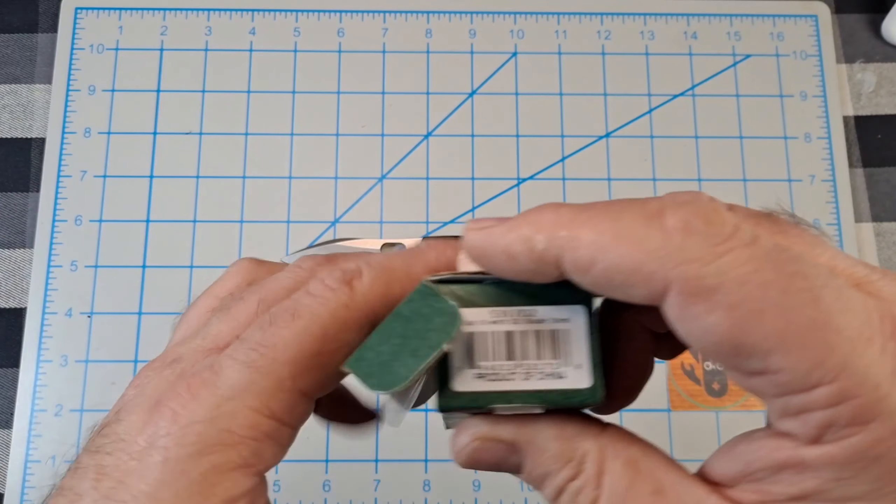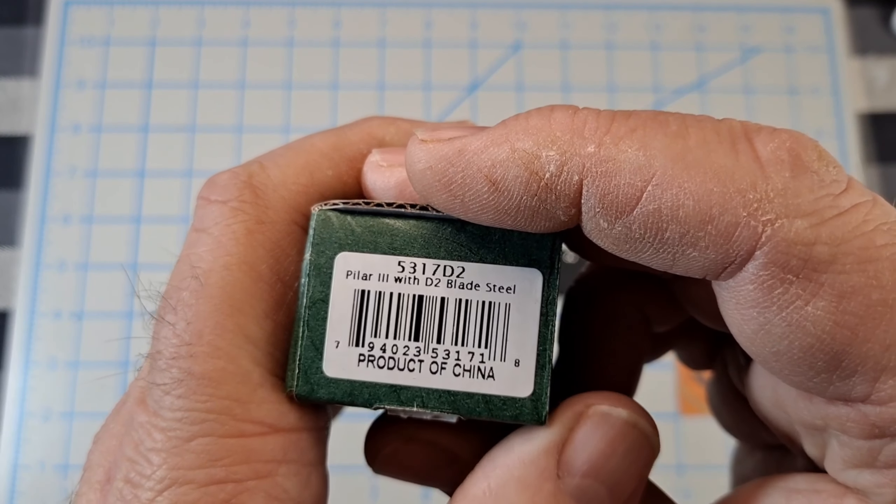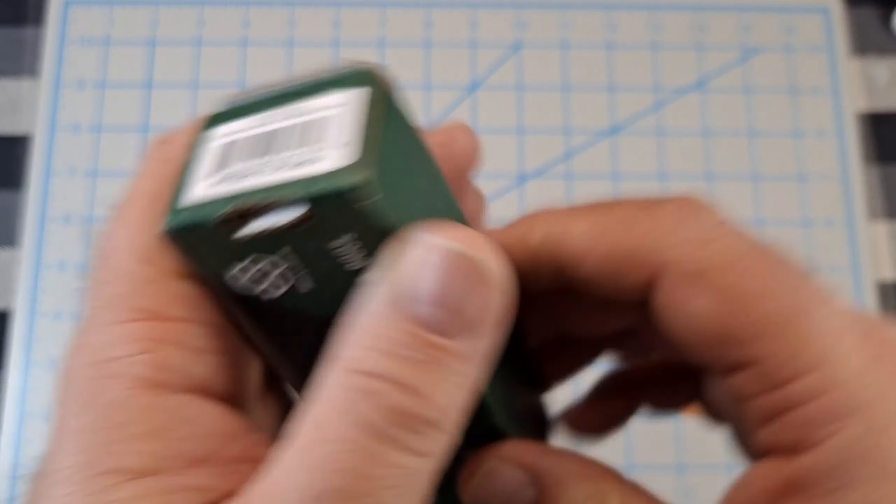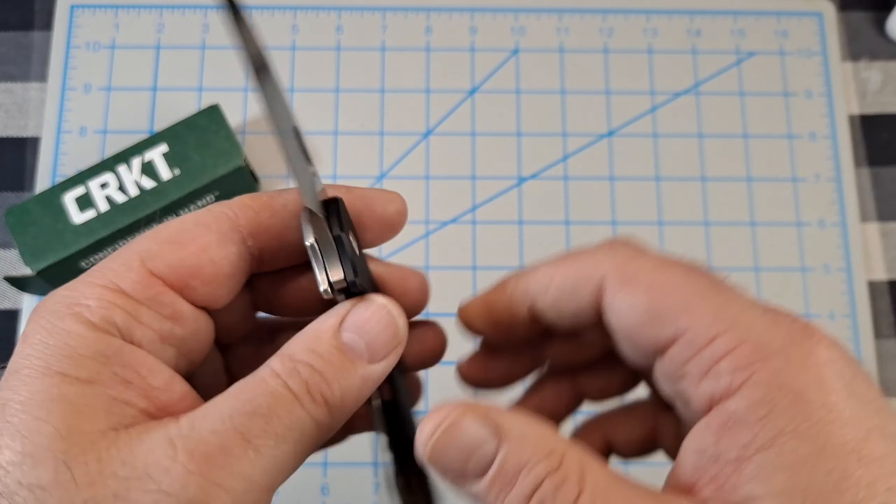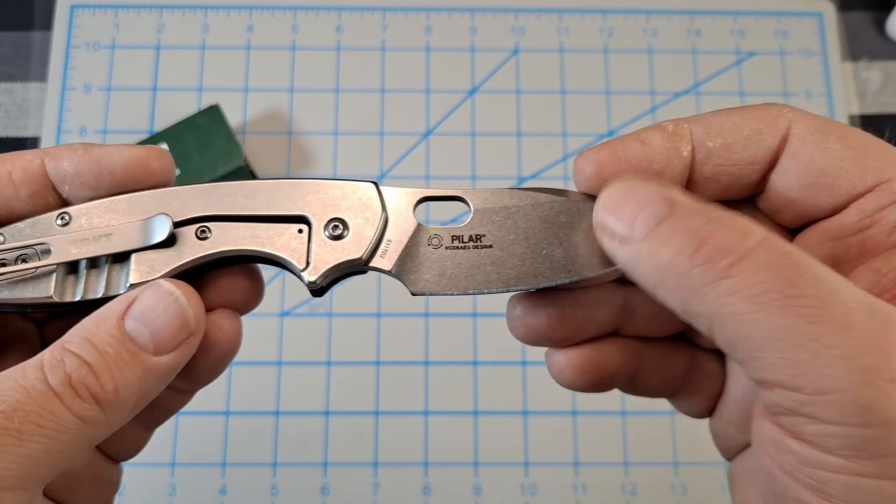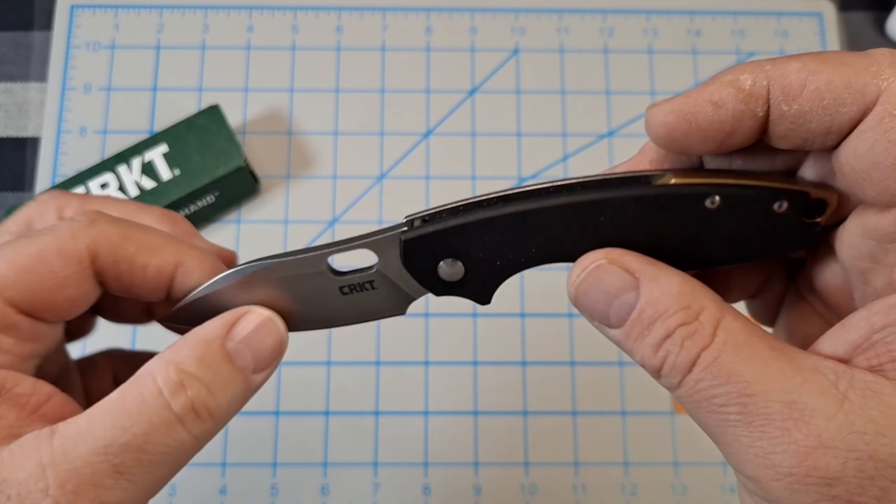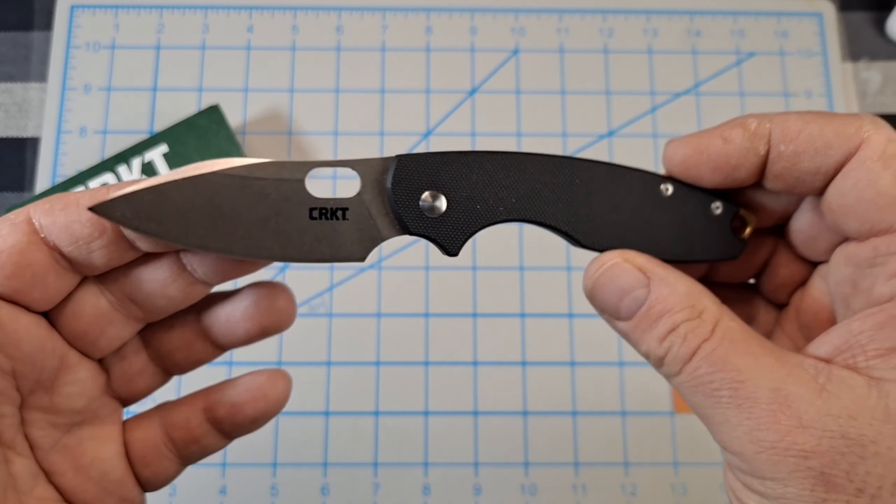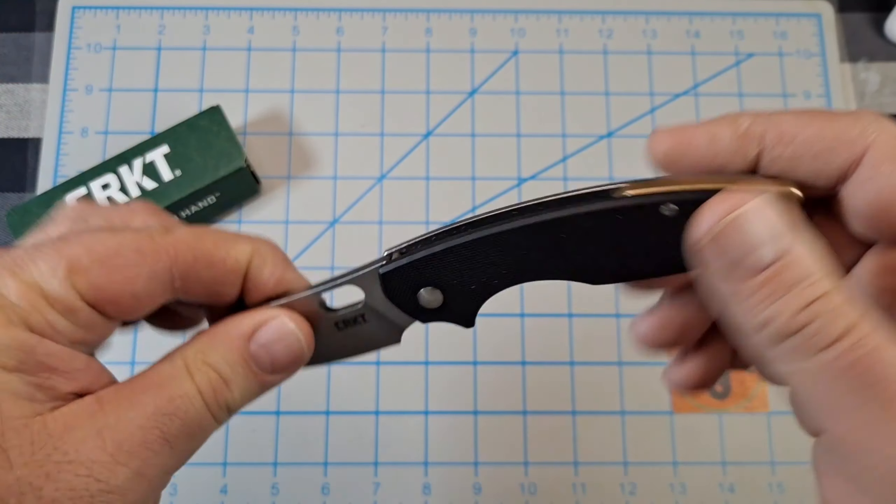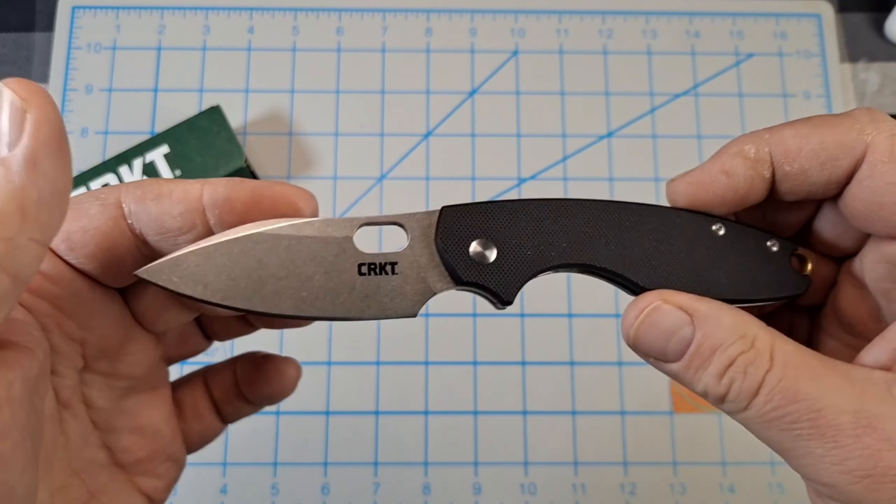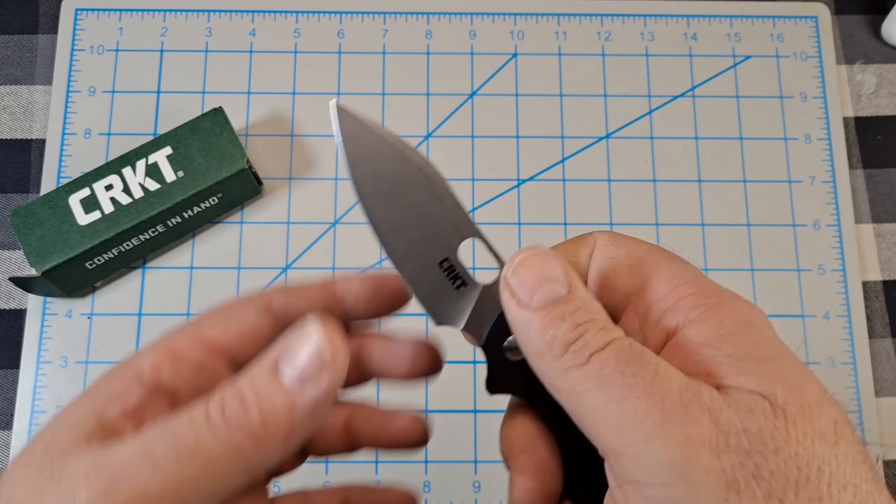So this is model 5317D2, Pilar 3 with D2 blade steel. Obviously I got the D2 version. They do have an 8CR13MOV model that costs $38.95. This one, the D2, costs $51.95. So you can go a little cheaper and get the 8CR model, but I opted for the D2.